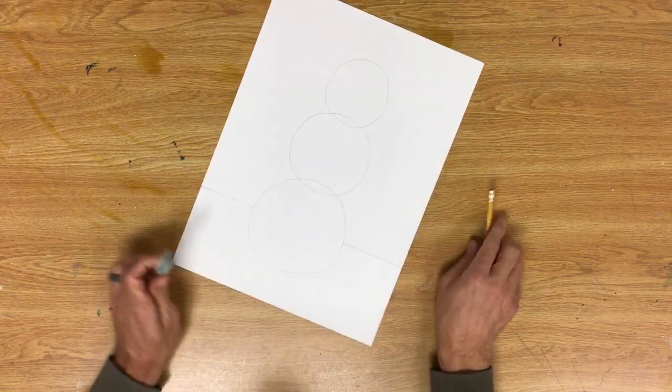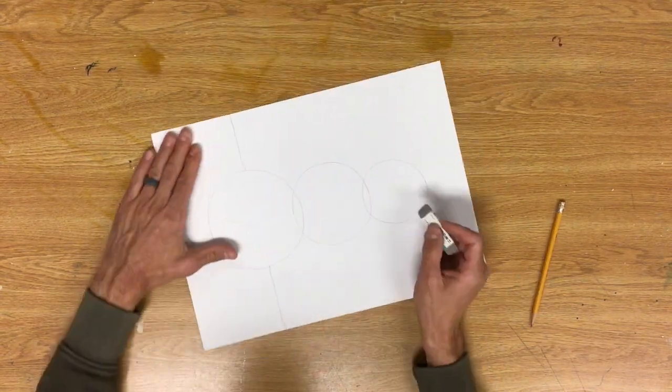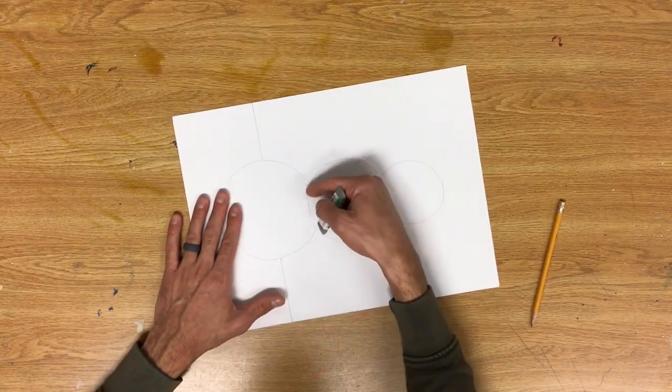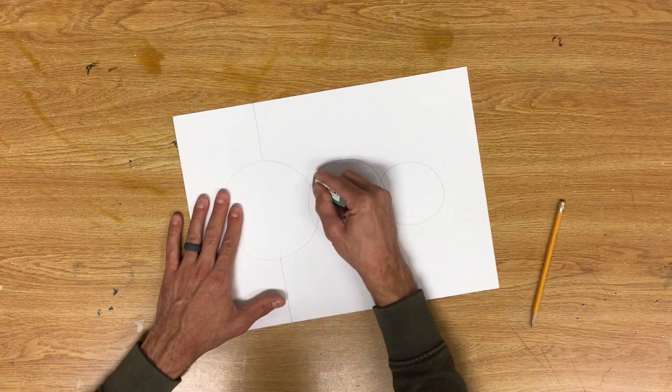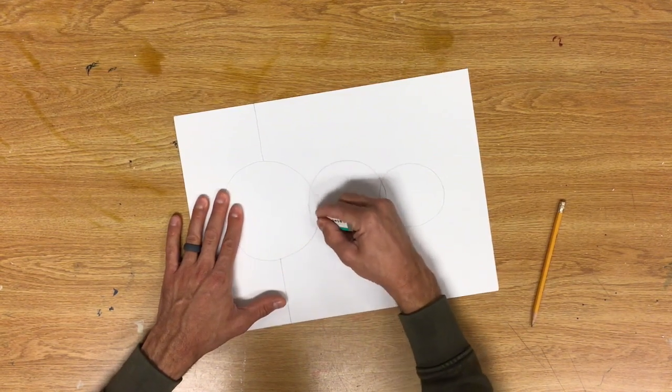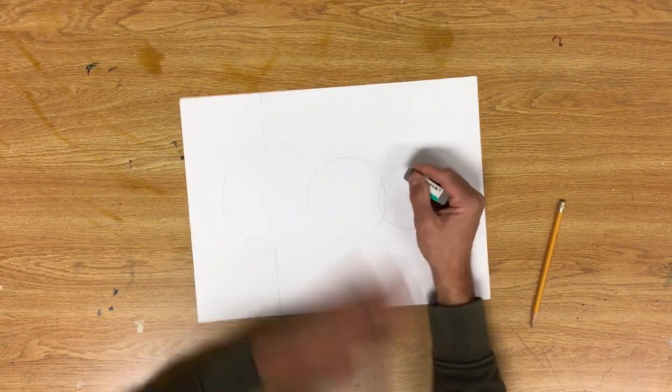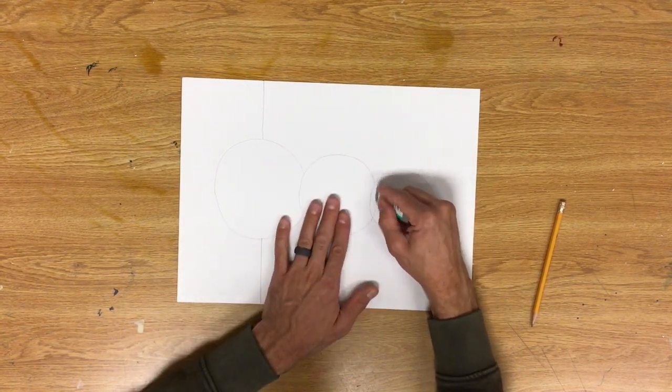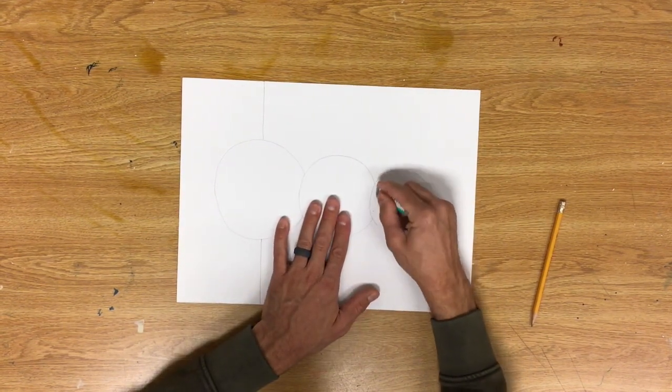Now I have these overlapping parts here. I do want to erase some of them. This is why you need to draw light. I'm going to leave my bottom curve and I'm going to erase the top curve. This will make it look like the snowballs are sitting on top of each other. If I erase the top and not the bottom. All right, there we go.